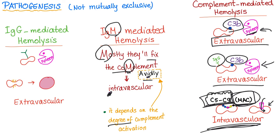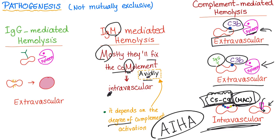These pathogeneses are not mutually exclusive. IgM doesn't directly destroy the red blood cell itself — rather, IgM can activate the complement system. So being an autoantibody doesn't preclude activating complement. In the next video, we will discuss the first type of immune hemolytic anemia: autoimmune hemolytic anemia, or AIHA.